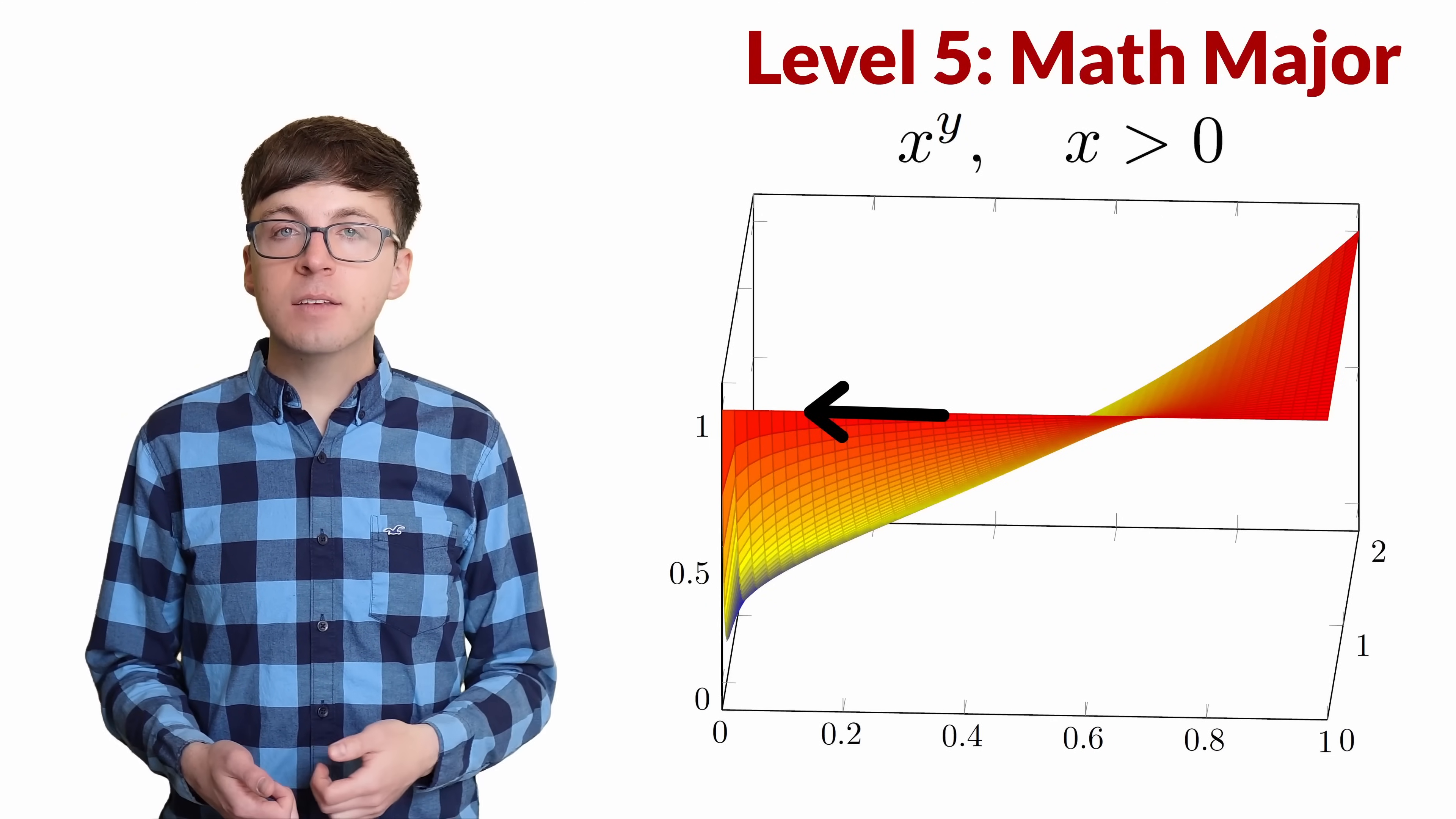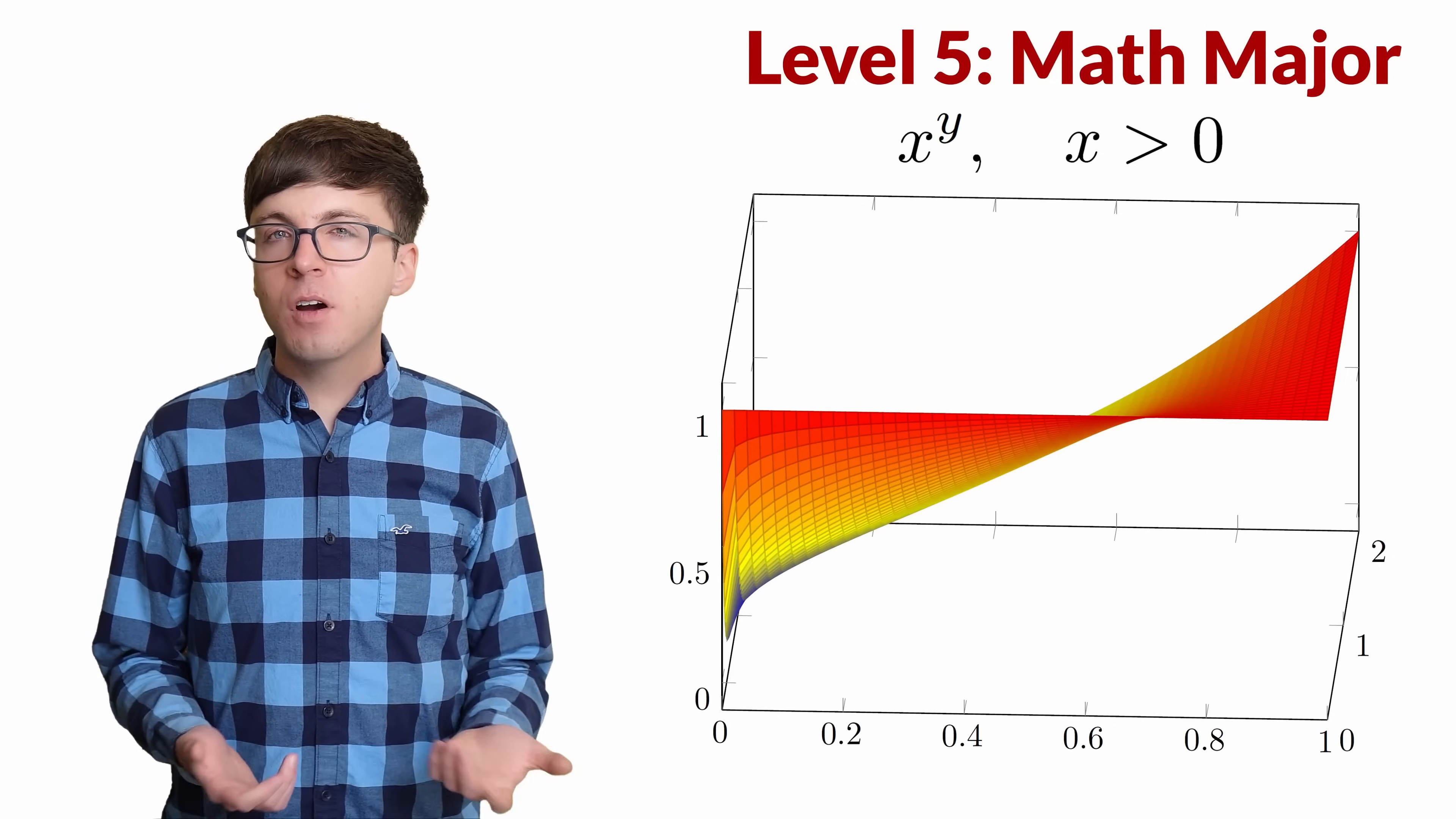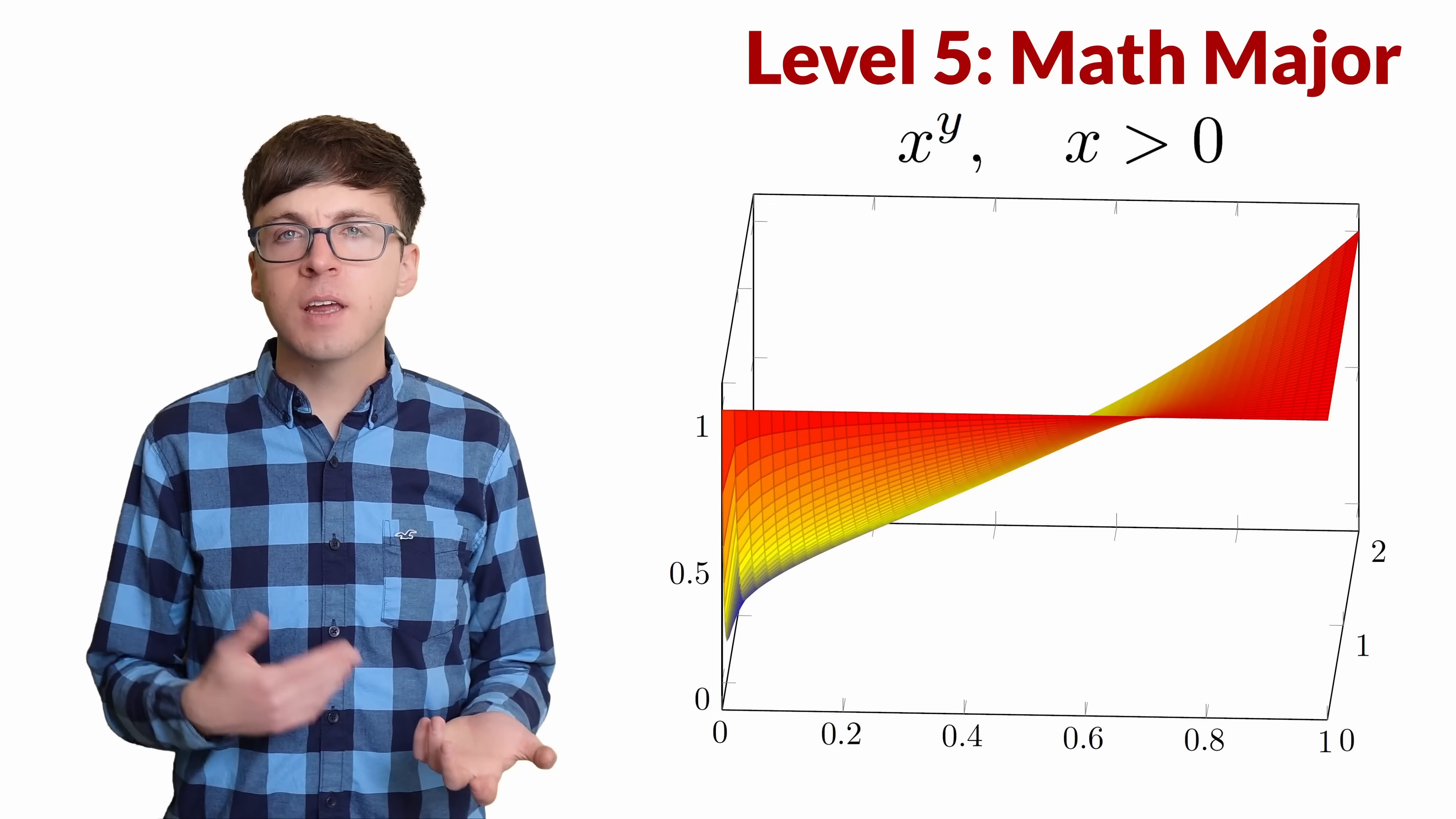If we approach along the positive x axis, then the y value is always 0, so the function simplifies to x to the 0, which is 1 since x is positive. Approaching along this path, the limit should be 1. But if we approach along another path, the limit may not be 1. We actually saw an example of this in level 4. The limit of e to the negative 1 over t to the t is e to the negative 1 as t approaches 0 from the positive side. So no matter what value we pick to define 0 to the 0, this is not going to be a continuous extension of the function x to the y.